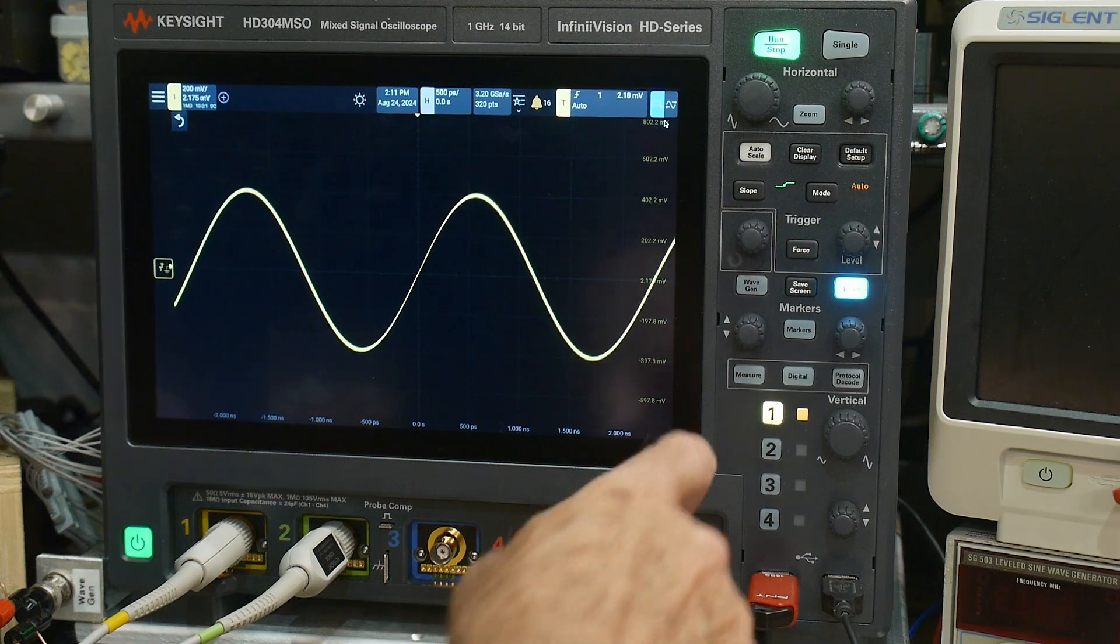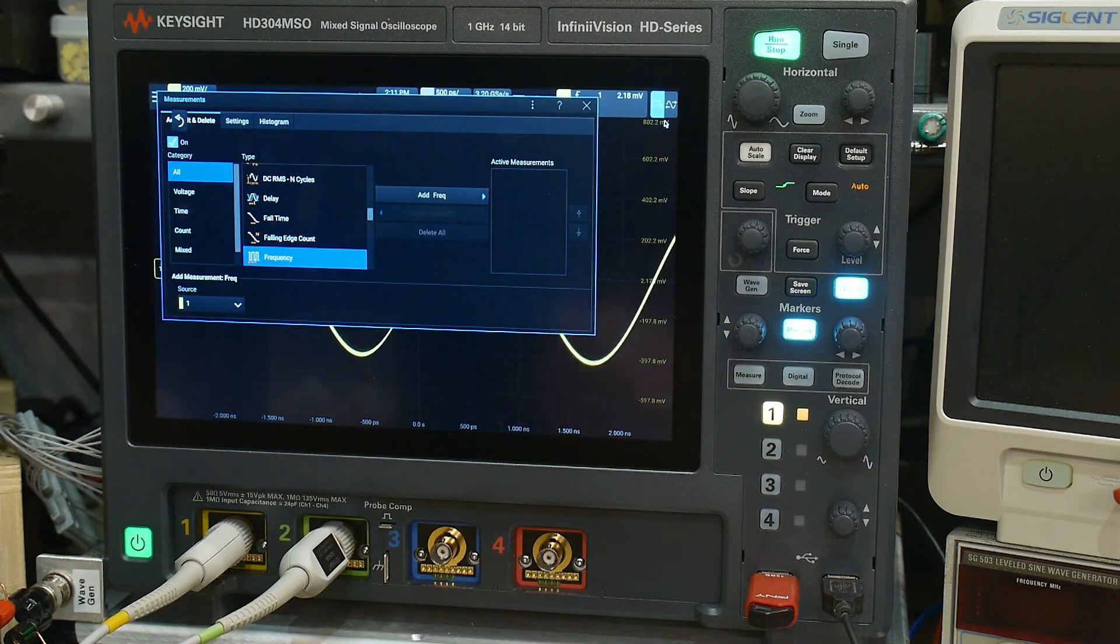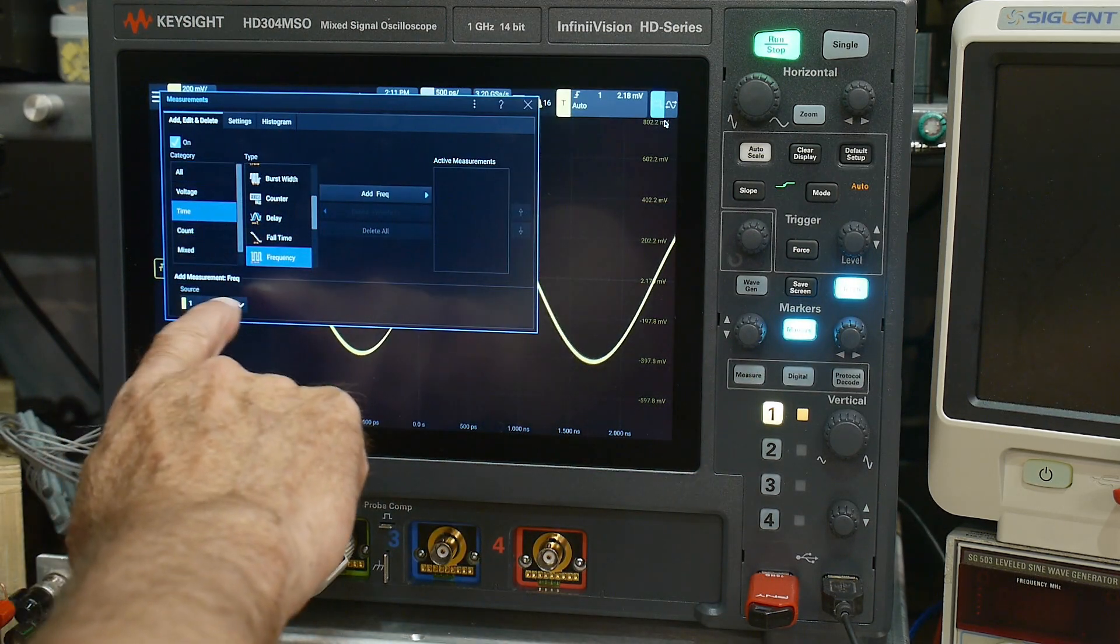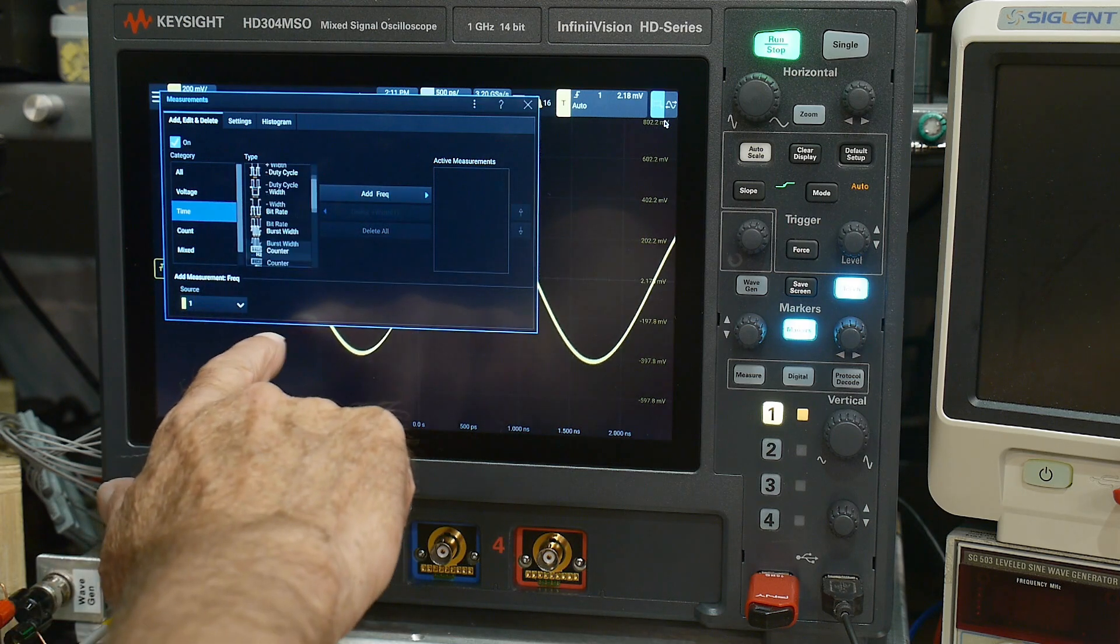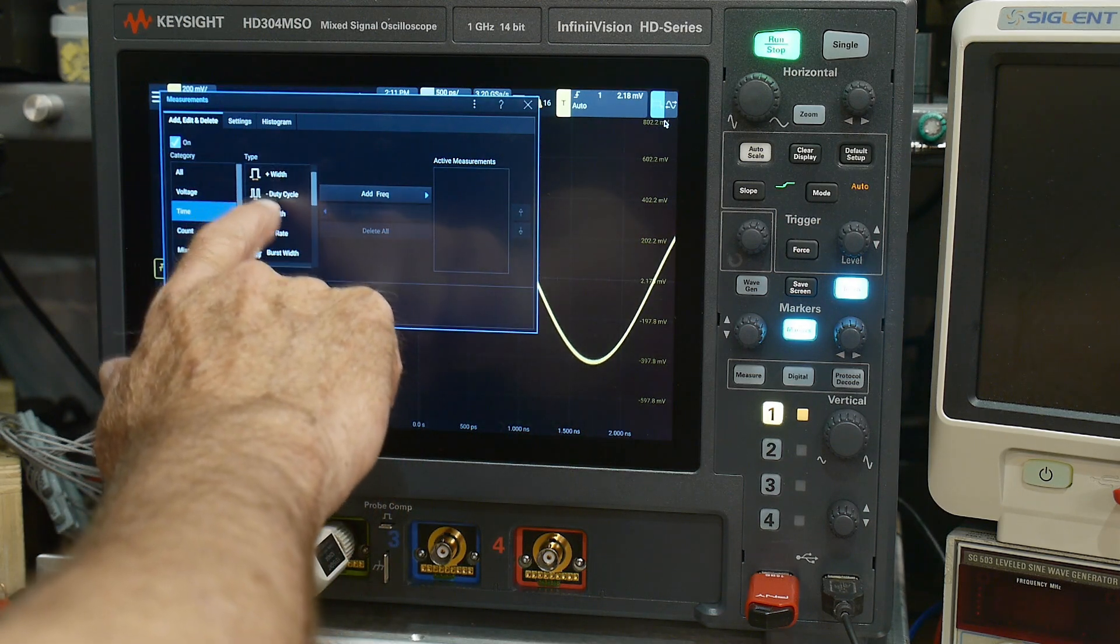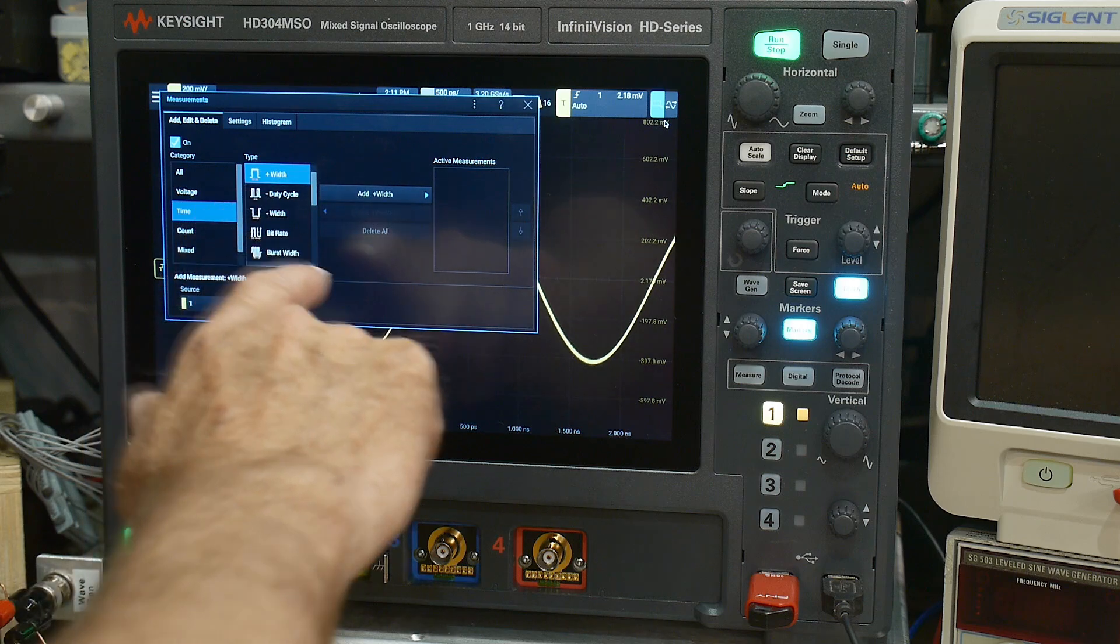Let's see if we can set up a measurement on that. We'll turn on measurement. It's a time measurement. We want to do a pulse width.